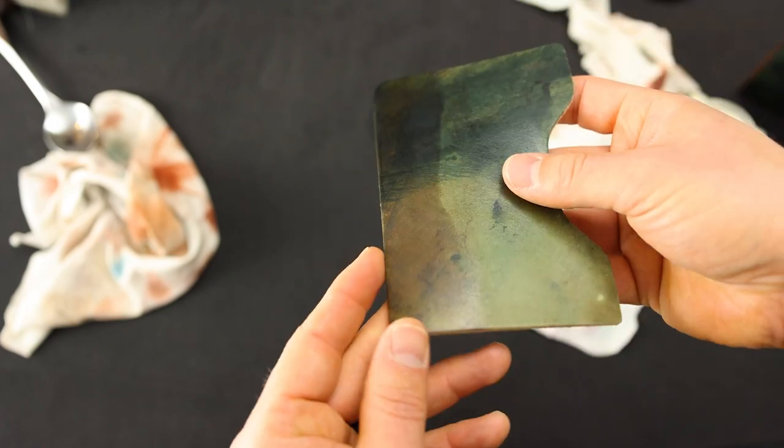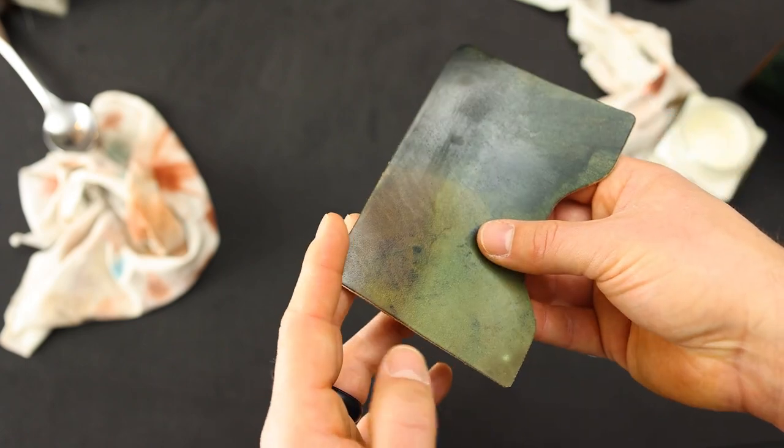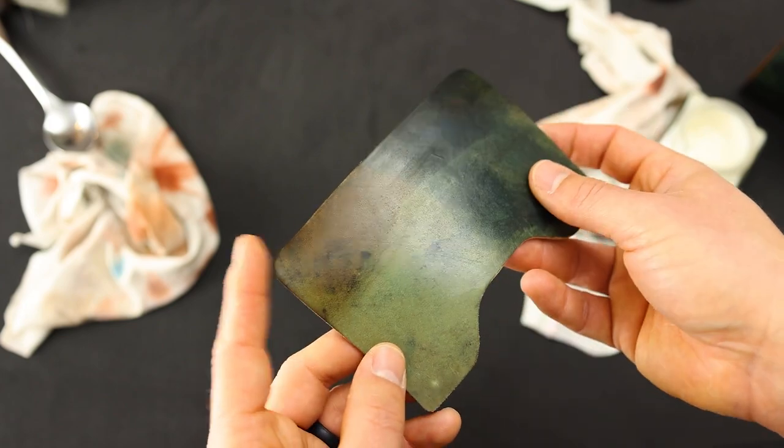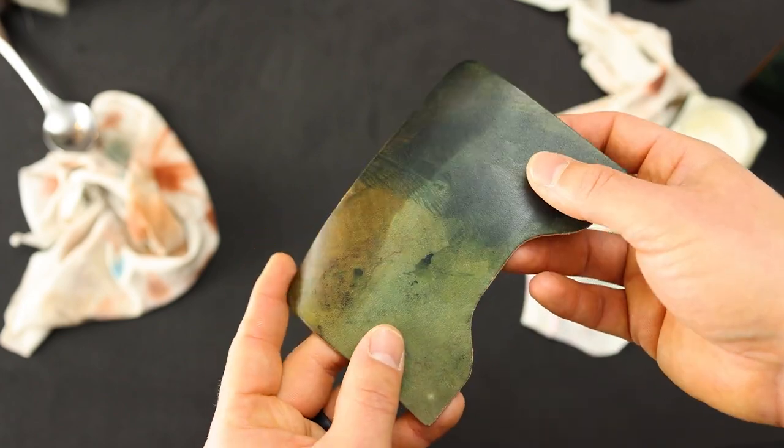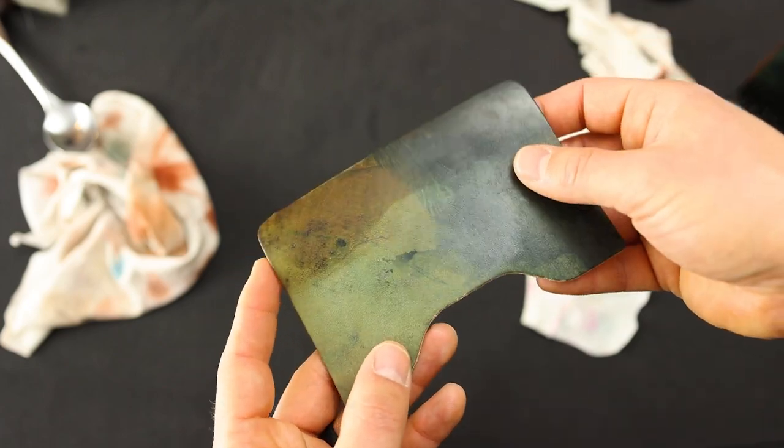I found it works really well on the reverse cordovan. In fact, we actually offer an option where we do something called hand glazing. We don't actually water polish it. We use a different product and we get a similar result. And it sort of gives you this nice glassy sort of wet look on the surface of the leather.